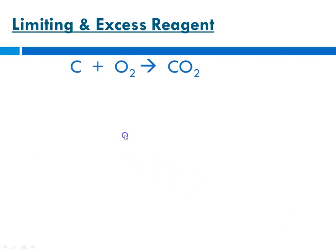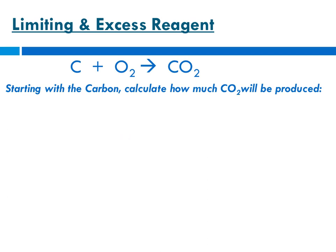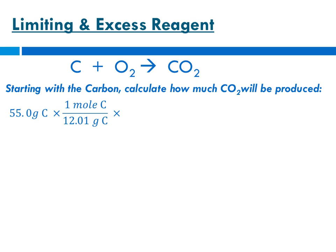Now the setup. We're going to start with carbon and calculate how much carbon dioxide will be produced — going from the first reactant to how much product we can make. We started with 55.0 grams of carbon. Now we use molar mass to get from grams of carbon to moles of carbon. The grams of carbon are given in the numerator, so in our conversion factor we need to put it in the denominator so it cancels out.